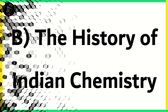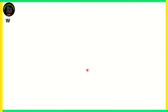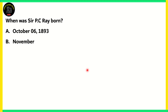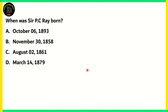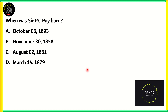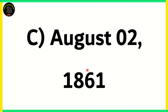Next question: When was Sir P.C. Ray born? A) October 6, 1893, B) November 30, 1858, C) August 2, 1861, or D) March 14, 1879. The correct answer is Option C, August 2, 1861.